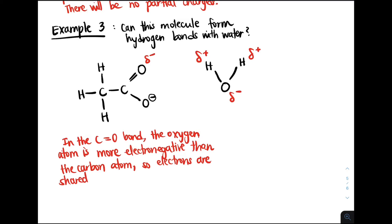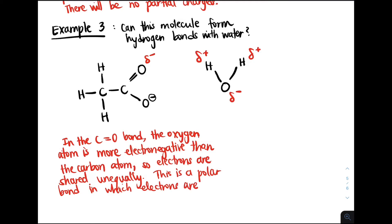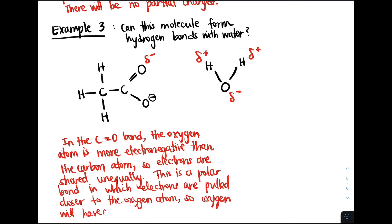In this polar covalent bond between carbon and oxygen, electrons are shared unequally. Since this is a polar bond, partial charges form because electrons are closer to the oxygen atom than the carbon atom. So oxygen is going to have a partial negative charge, and this can hydrogen bond with the hydrogen atom on water that has a partial positive charge.